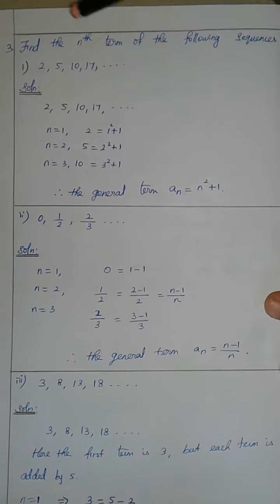Since the difference is the same, we can write the nth term. We take 5 into n minus 2. For example, 5 into 1 minus 2 equals 3, and 5 into 3 minus 2 equals 13. So the general term formula is 5n minus 2.